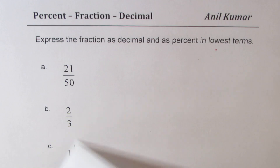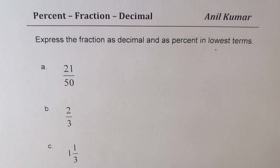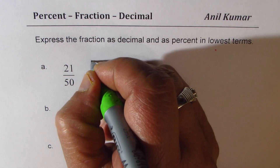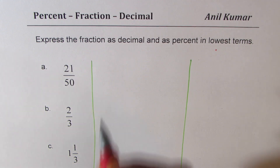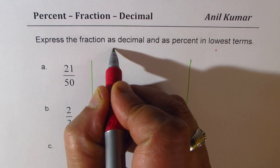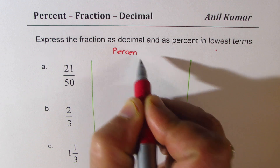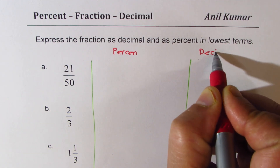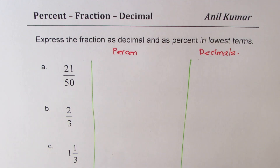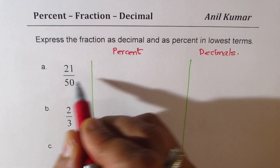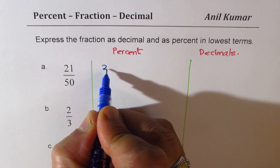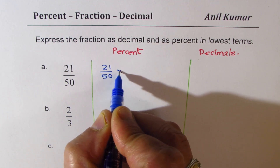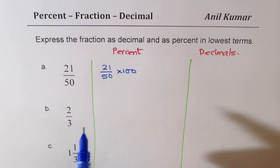Now lastly, let us see how to convert fractions to percent and decimals. For percent, you need to multiply by 100 — whatever fraction you have, just multiply by 100 to get percent.